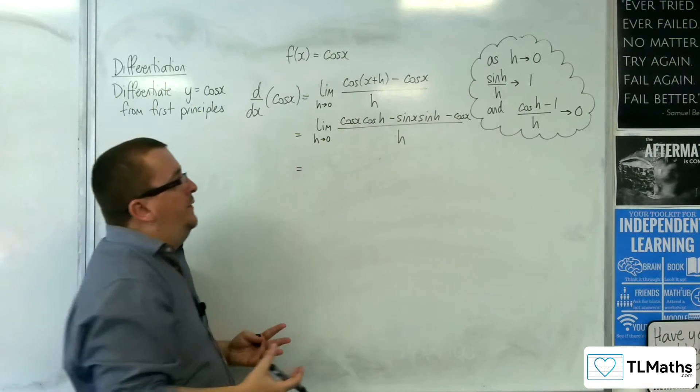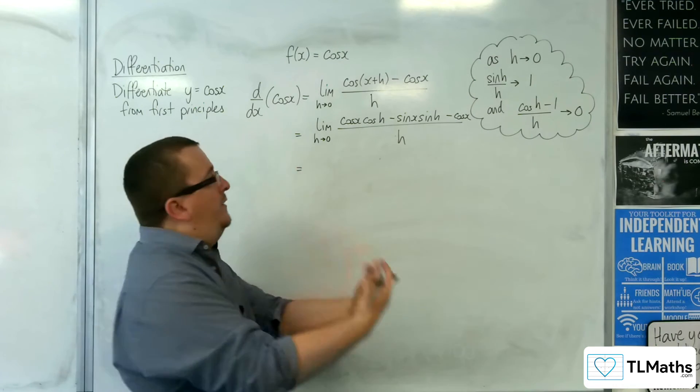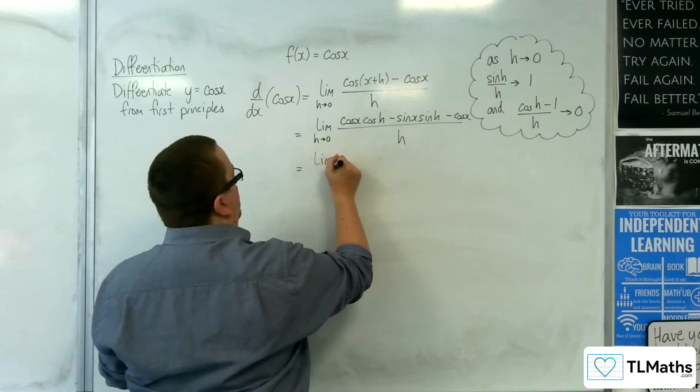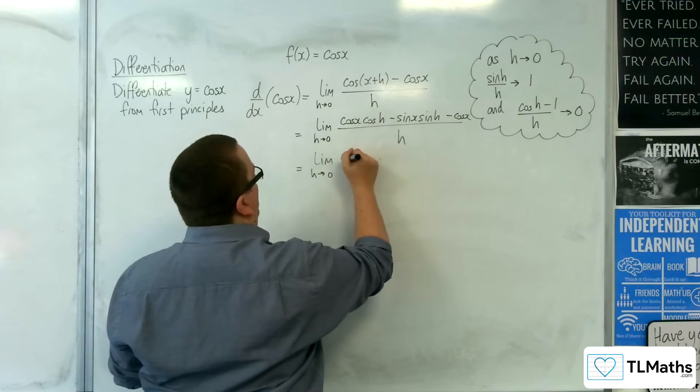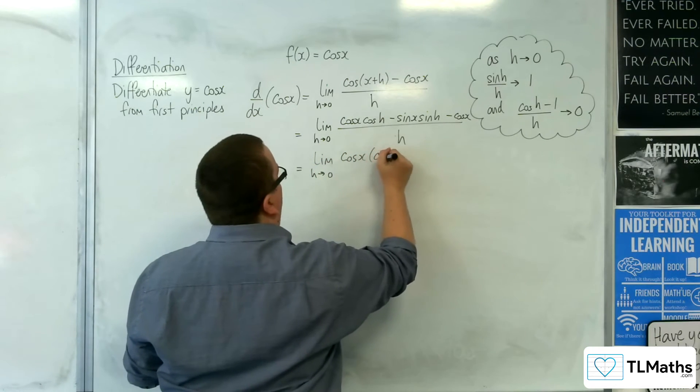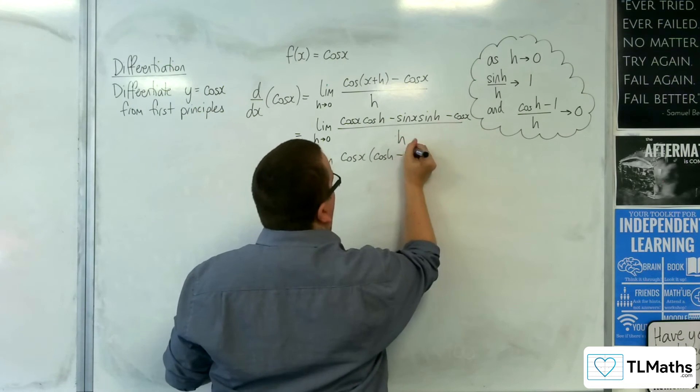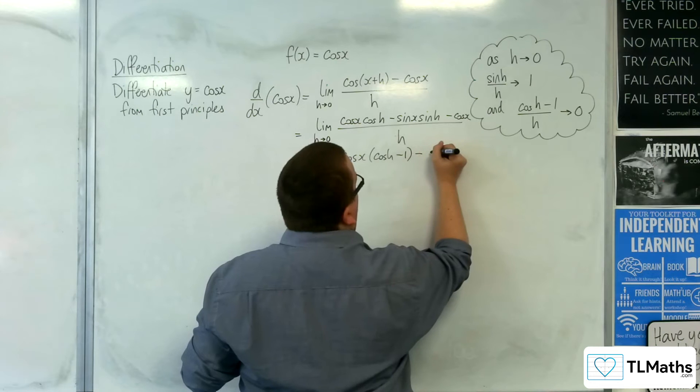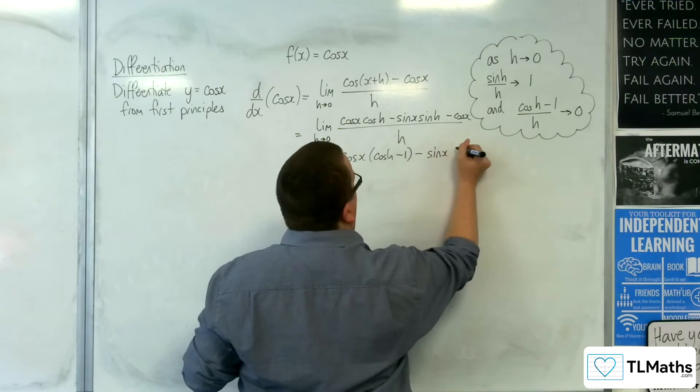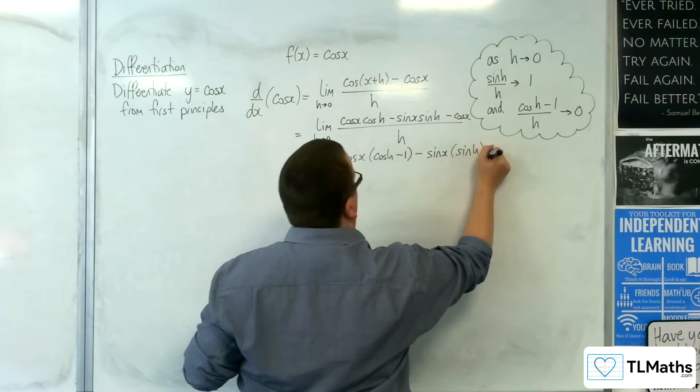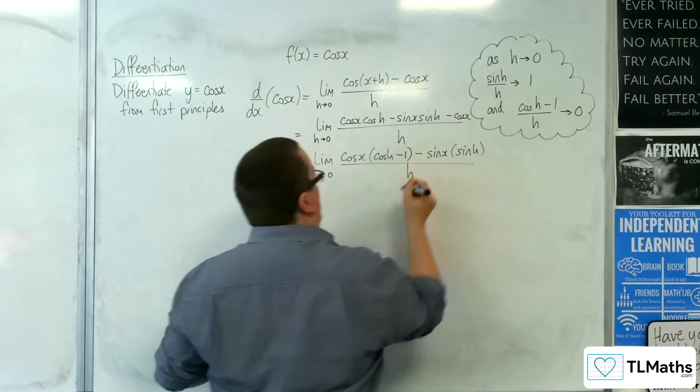We then want to factorize to have cosine x and a sine x. So we're going to have cosine x, and I'm going to put the cosine h in a bracket, and we've got that take away one lot of cosine x there as well. And let's factor out the sine x as well, so sine x lots of sine h, all over h.